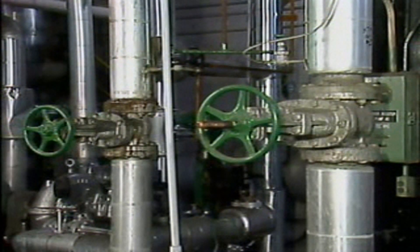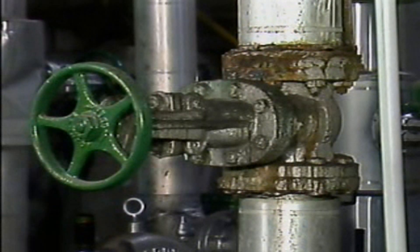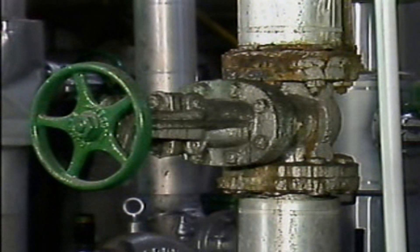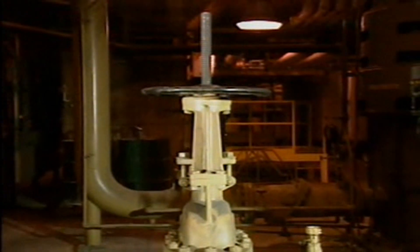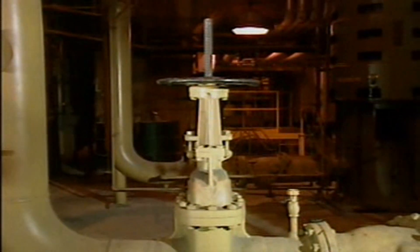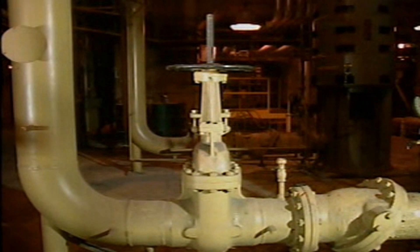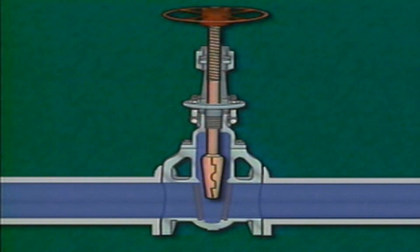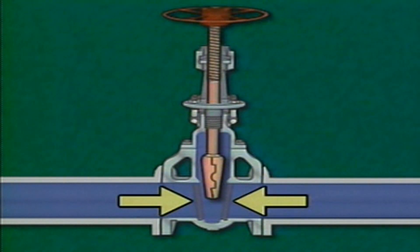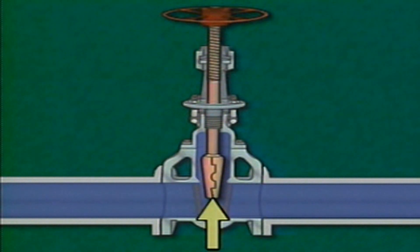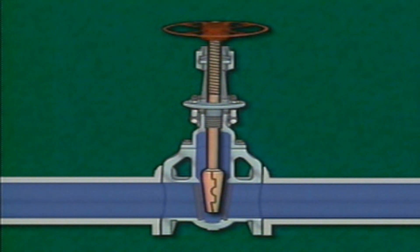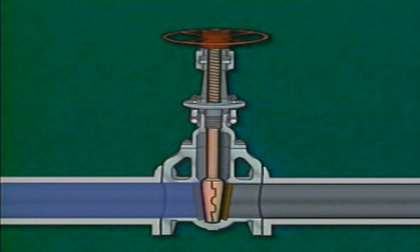Gate valves are primarily used for turning fluid flow on and off and for isolating equipment. They're normally installed in applications where straight flow is desired. A gate valve generally has a relatively long body and stem, which extends some distance beyond the piping that the valve is connected to. A gate valve typically has two seating surfaces and a disc that fits between them. The disc is raised and lowered, like a gate, to start or stop the flow of fluid through the valve.